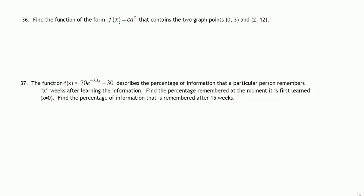Find the function of the form f(x) = c·aˣ — an exponential function — that contains the two graph points (0, 3) and (2, 12). The first coordinates are x values and the second are the corresponding f(x) values. The unknowns are c and a, and a must be a positive number. Using these two points, we need to find the values of c and a.